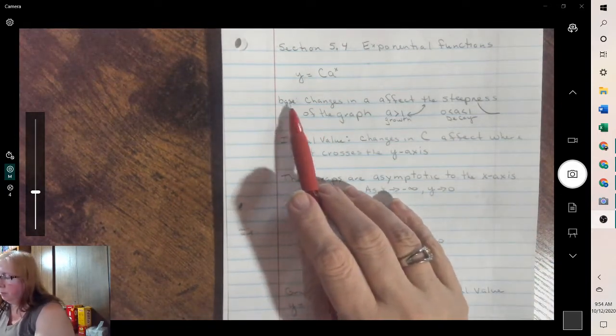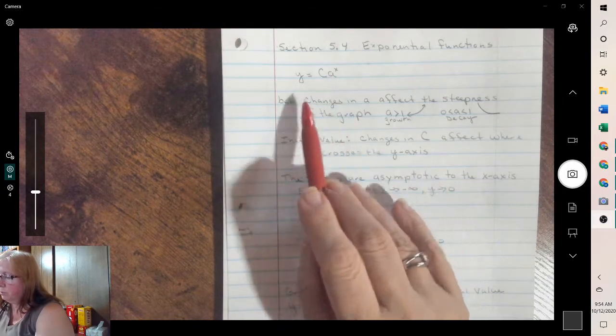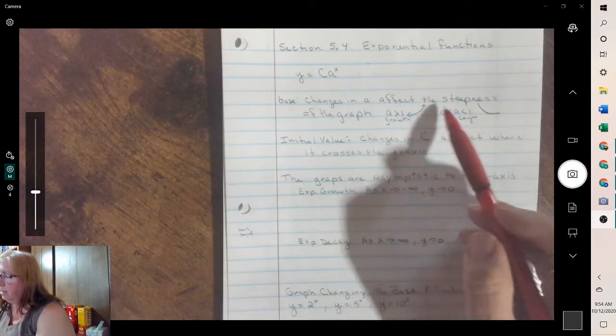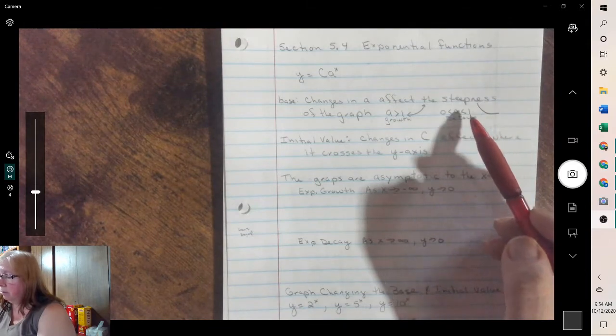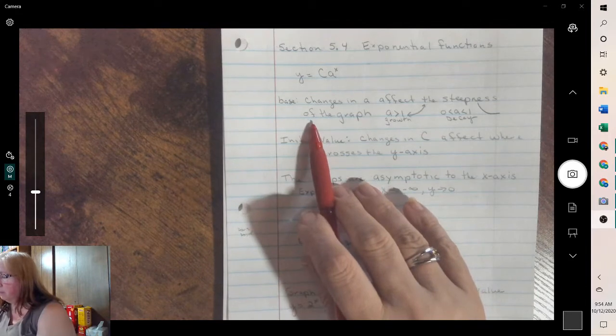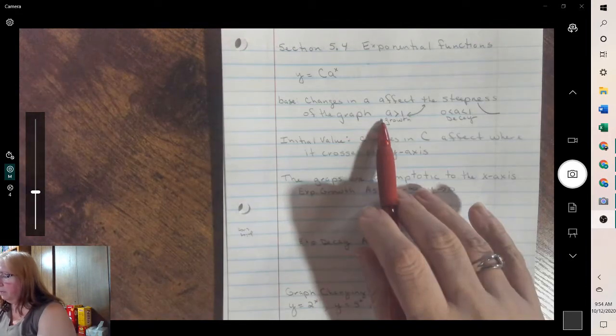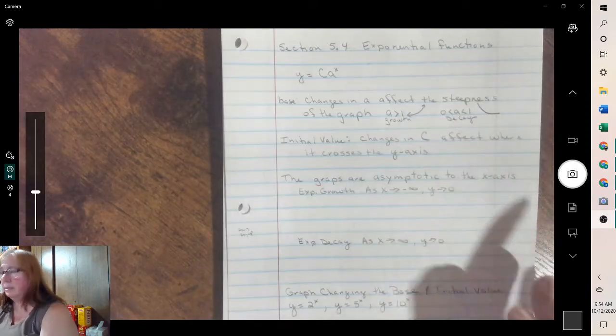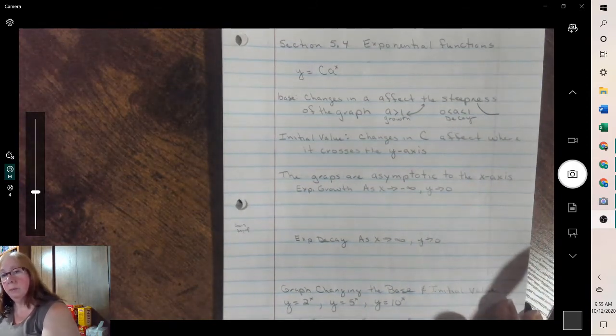To talk about the curves on the base, which is your a, the value of a affects the steepness. So it depends on how steep it will be, and we'll look at some examples. If it's greater than 1, it's growth. If it's between 0 and 1, it's decay. But in either case, it is always positive.